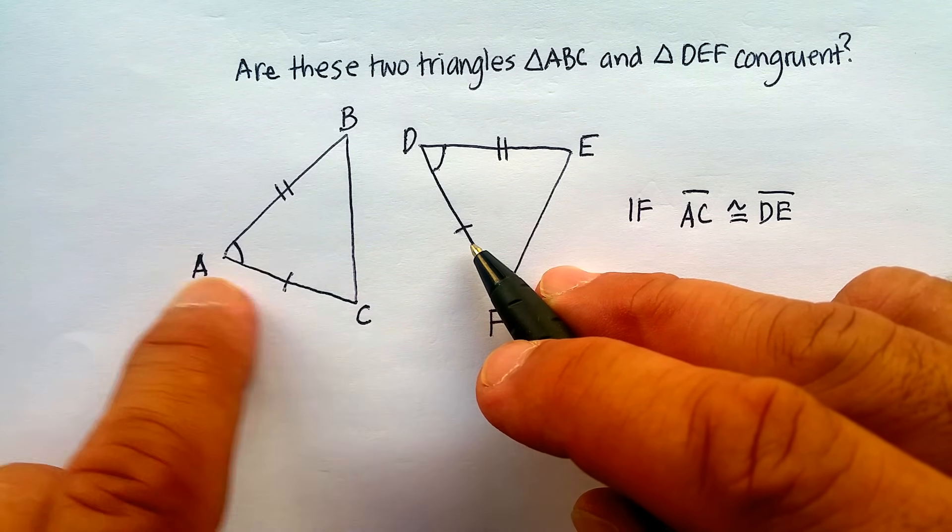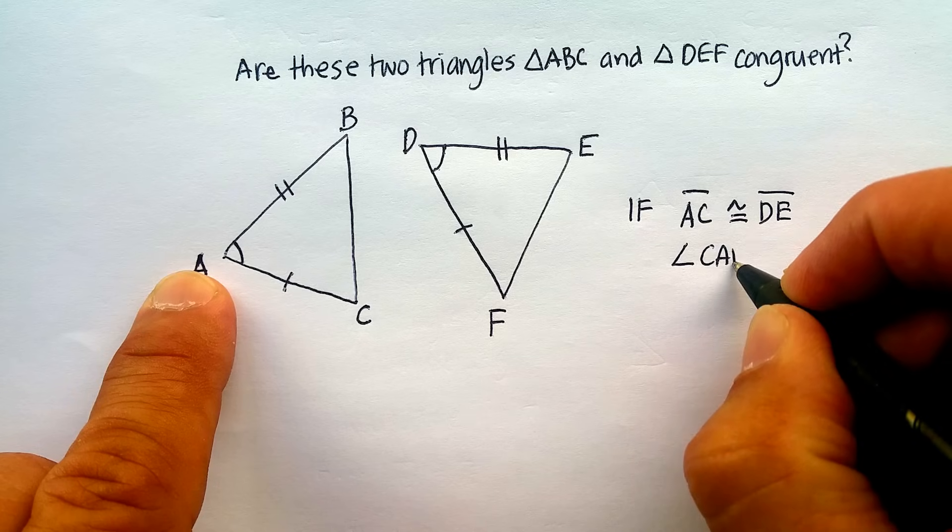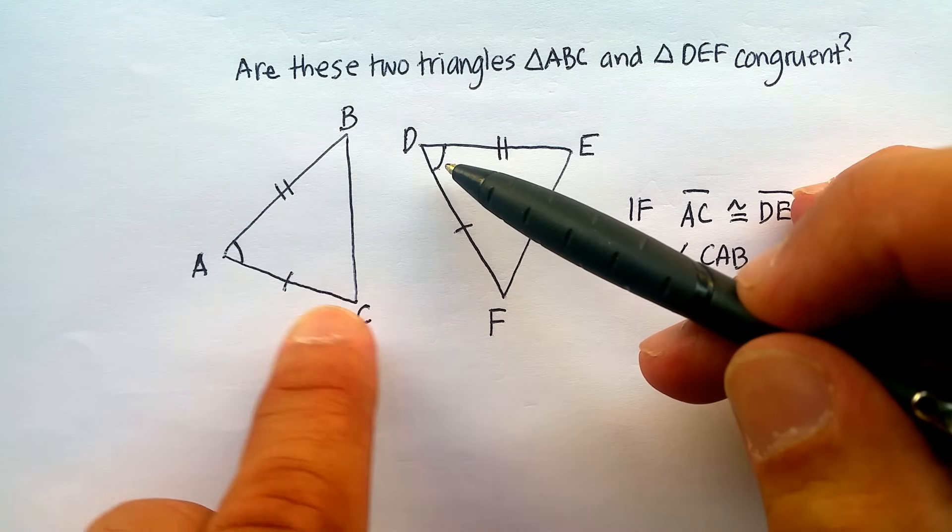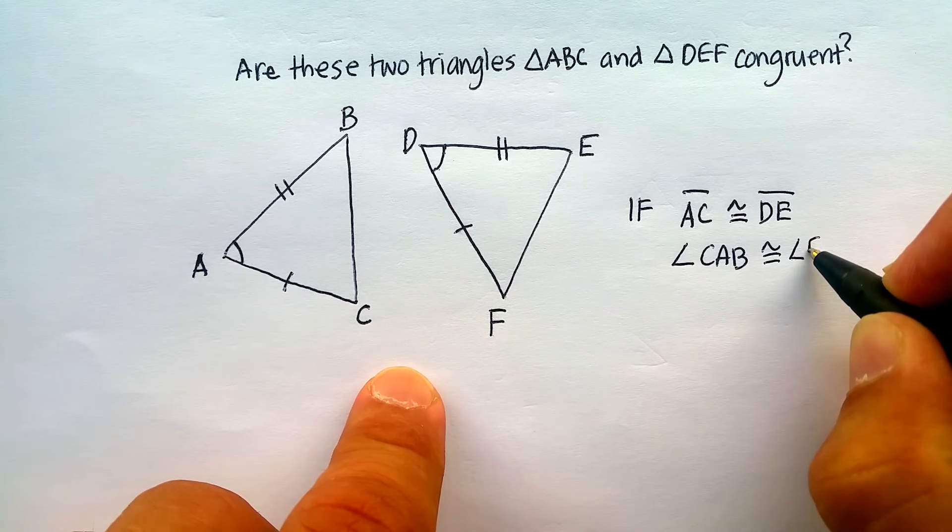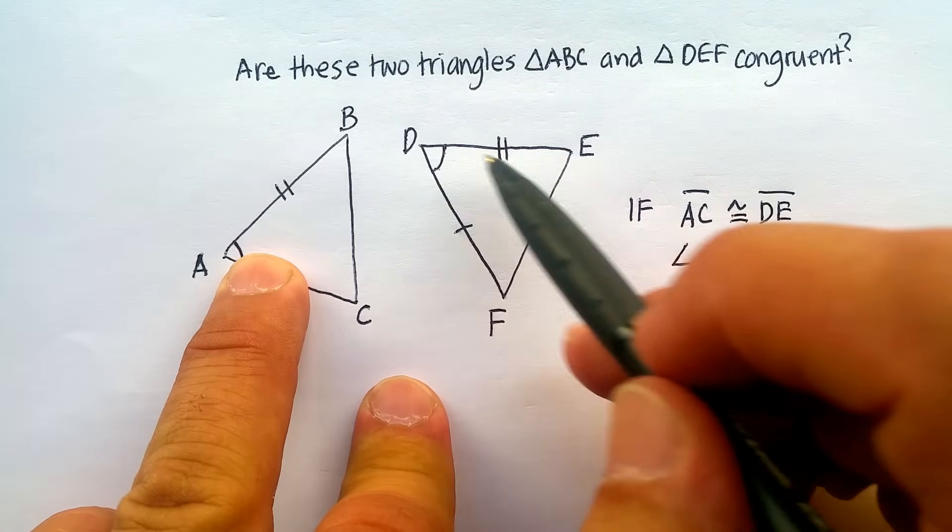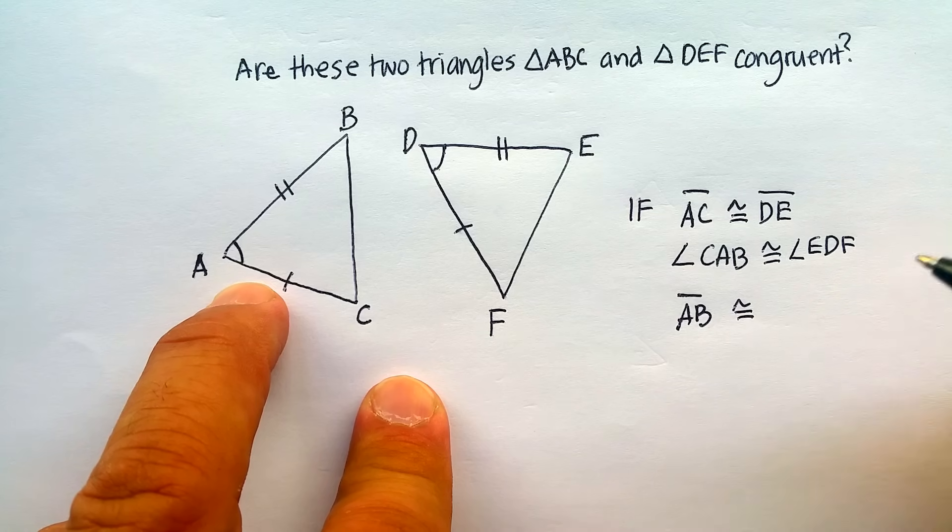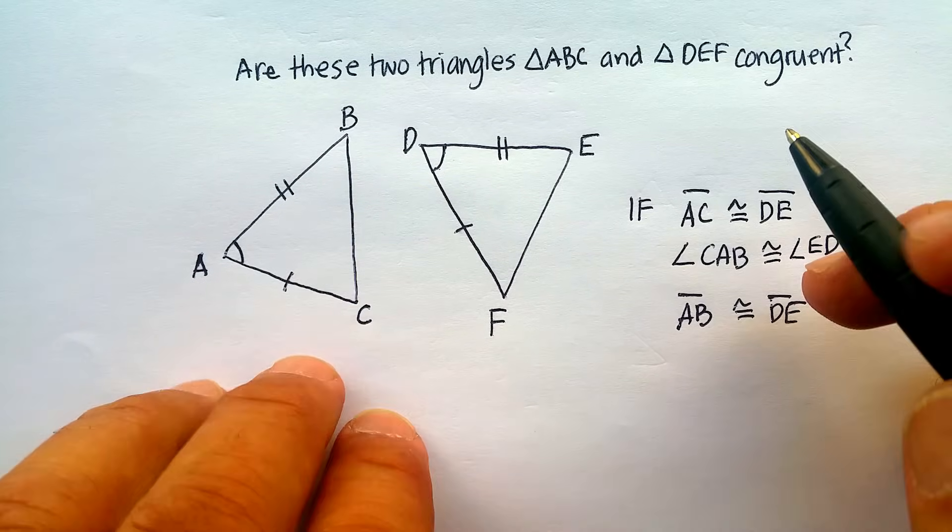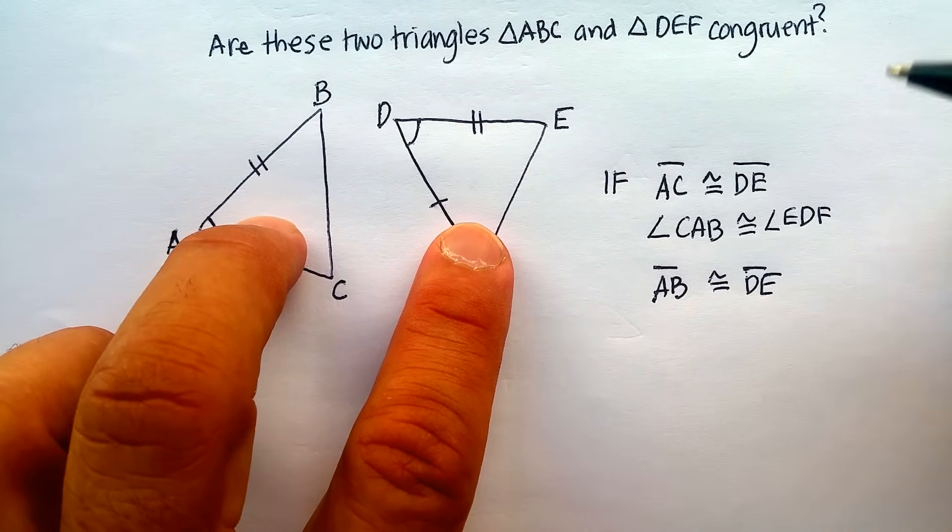And it looks like angle CAB looks like it's congruent with angle EDF because of this similar mark here, right? So it's congruent to angle EDF. And it also looks like I have this side as congruent. So, line segment AB is congruent to line segment DE. All right, it looks like I've actually been able to identify all the givens from my two triangles.